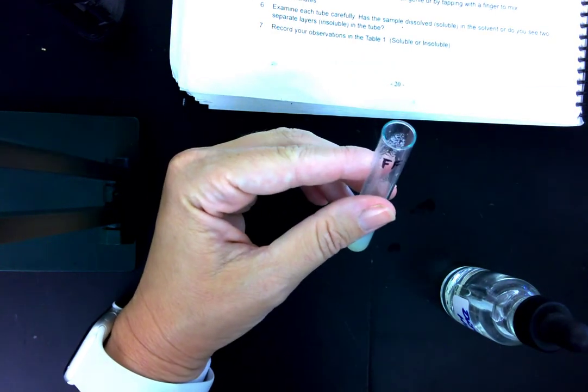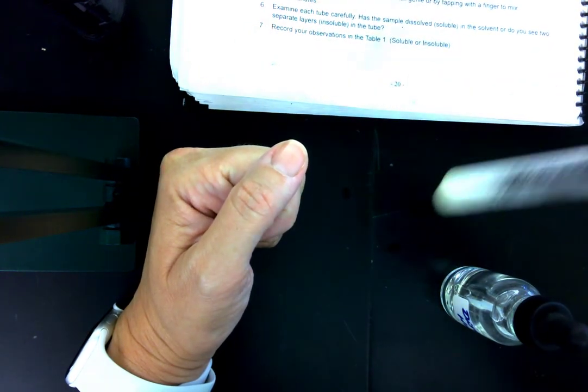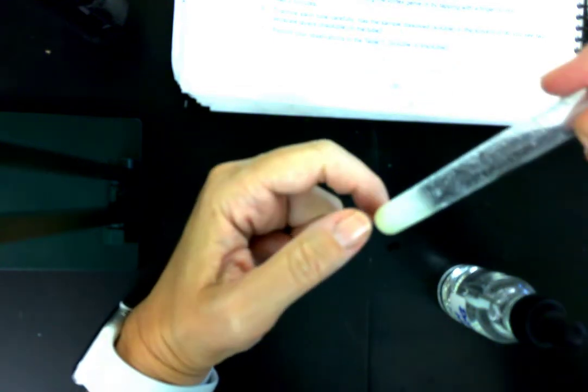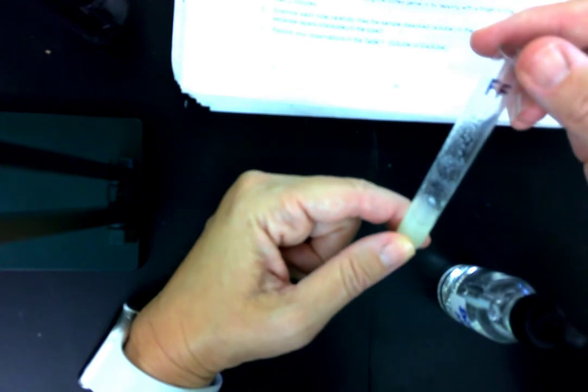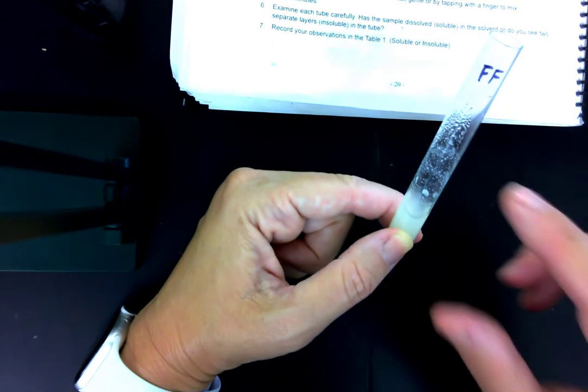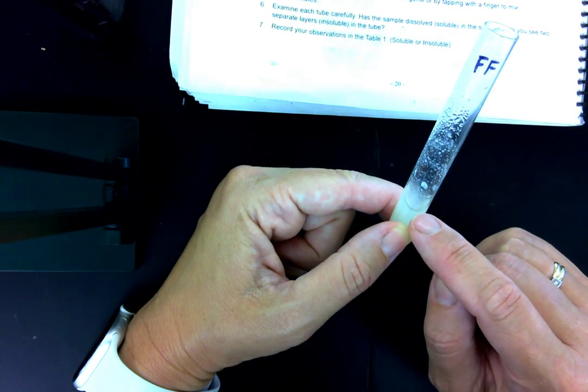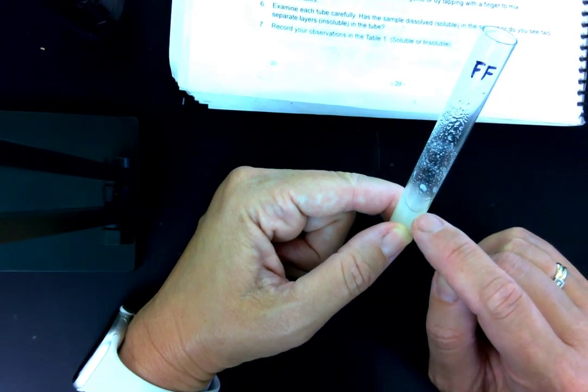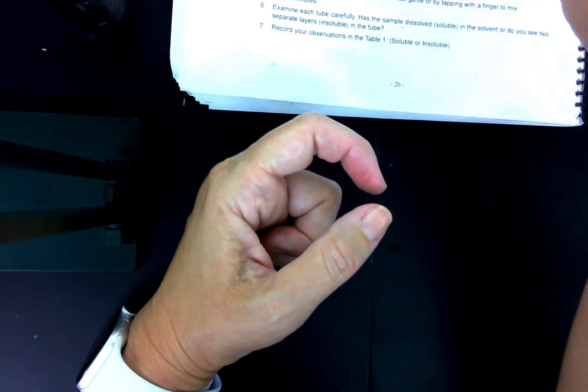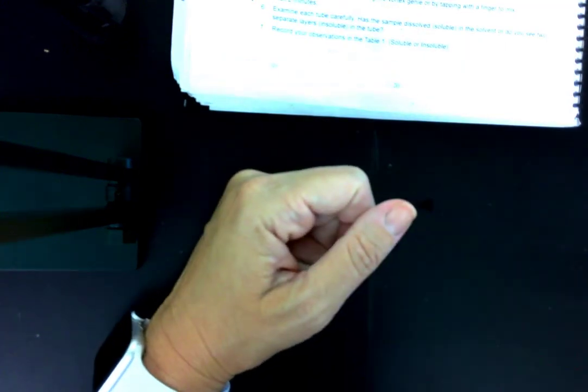This one also, at least right now, mostly just looks cloudy. But what I'm going to do is I'm actually going to come back to the french fry later because sometimes what we find with these substances like food is that the layer of fat, if we find it at all, it just forms a very fine layer at the very, very top. So I'm going to let it sit for a while and see if any fat rises up for the french fry.